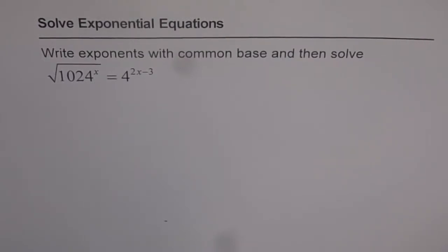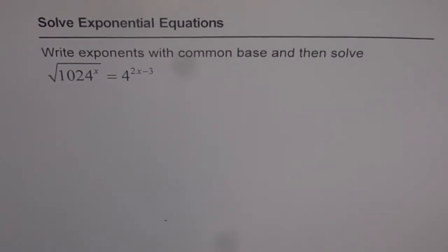Here is an interesting question to solve on exponential equations. Write exponents with common base and then solve: square root of 1024 to the power of x equals 4 to the power of 2x minus 3.